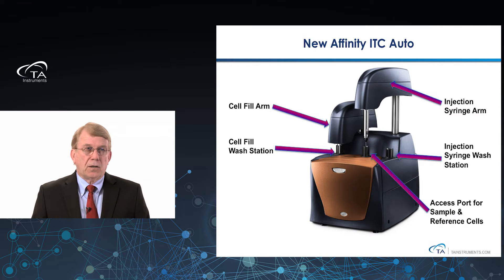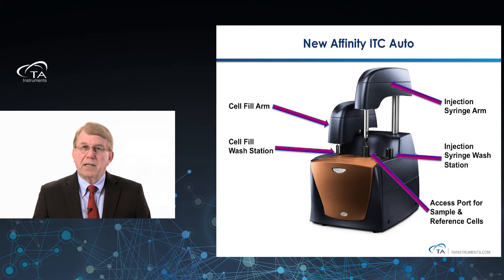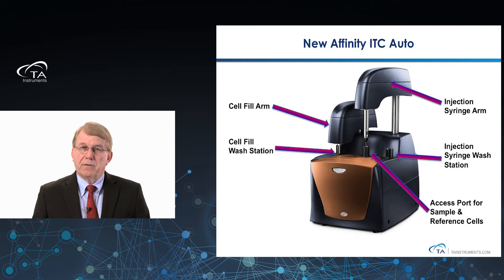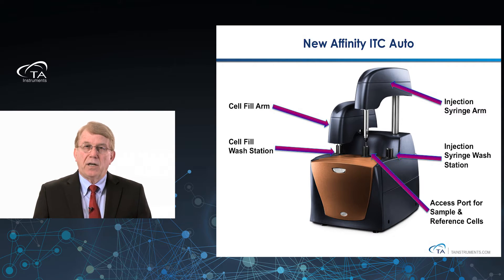The new Affinity ITC Auto goes even a step further by adding another automated arm on the left-hand side that fills the cell automatically when coupled to an autosampler. You have wash stations for both the injection syringe and the cell fill arm so that you can do fully automated cleaning. You have an injection syringe arm and then the access ports for the sample and reference cells. Think about a manual version that you can then fully upgrade in the field, with many new features.